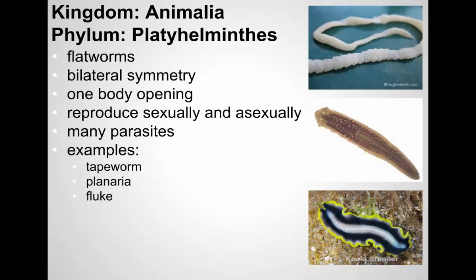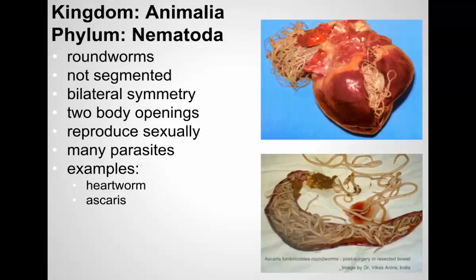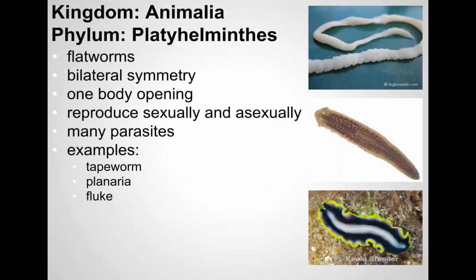Then there are the flatworms — the platyhelminthes. These have bilateral symmetry — two-part symmetry. They also have just one body opening for food to go in and waste to leave. Many are parasites, but not all. The planaria is not a parasite — it has the ability to regenerate. The tapeworm is a flatworm — tapeworms are intestinal parasites. There are also flukes, which are another free-living, non-parasitic type of flatworm.